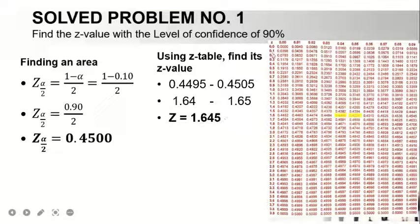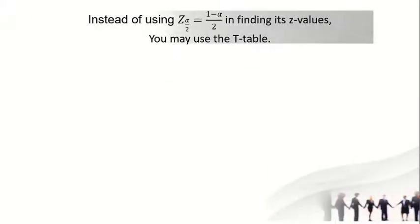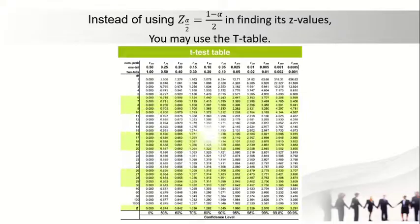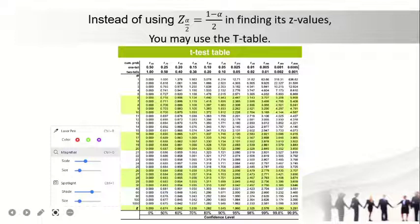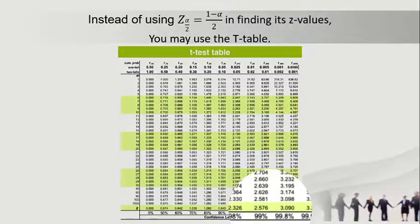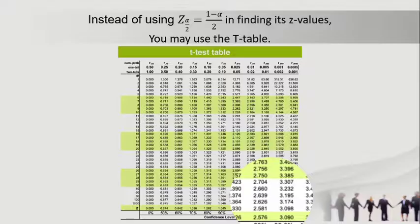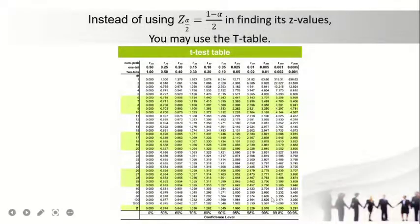Now, so you won't have difficulty, instead of using the z table, you may use the t table. This t table makes your computation easier so you don't have to look at the z table just to find the critical values. It depends on what percentage you have.